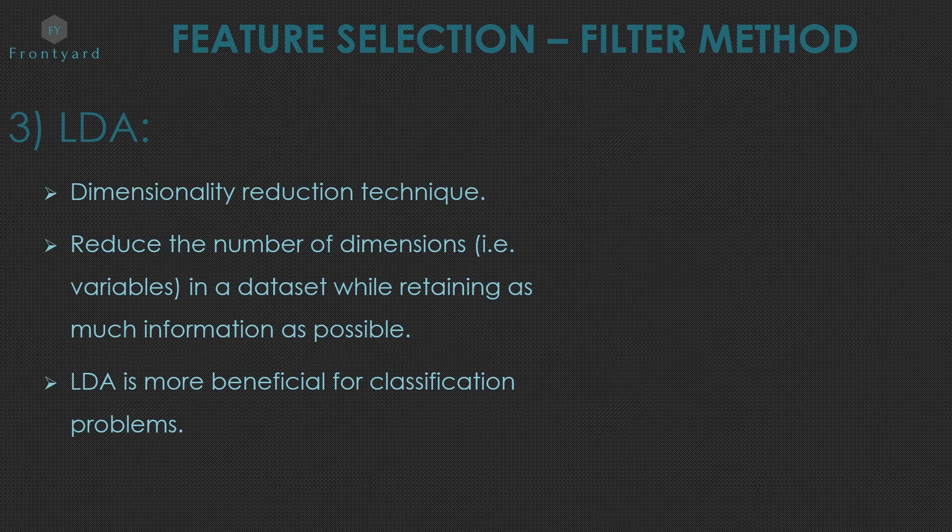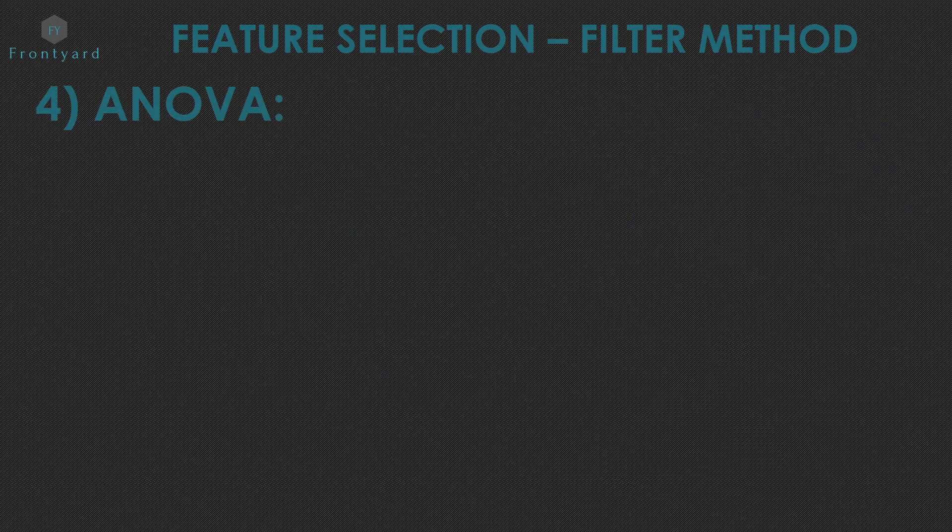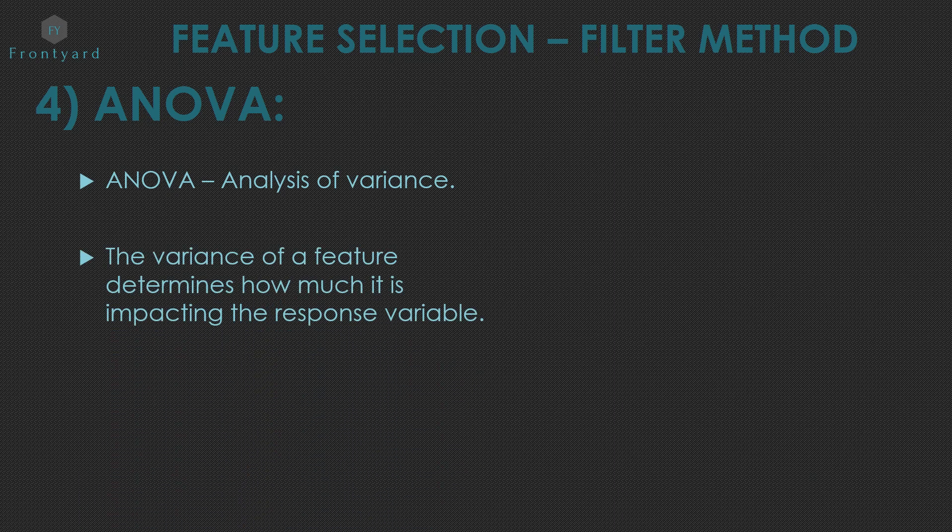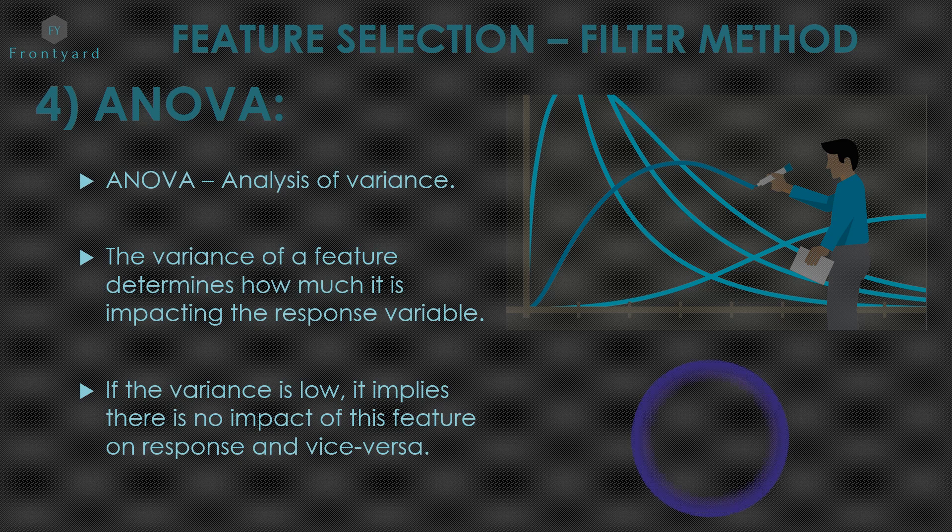Next is LDA. It is a dimensionality reduction technique. That means reduce the number of dimensions, that is variables, in a data set while retaining as much information as possible. LDA is more beneficial for classification problems. Next is ANOVA. ANOVA means analysis of variance. The variance of a feature determines how much it is impacting the response variable. If the variance is low, it implies there is no impact of this feature on response and vice versa.